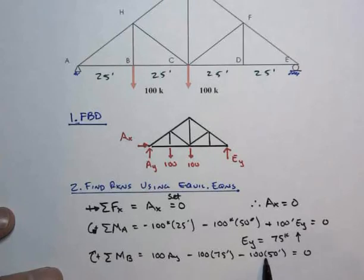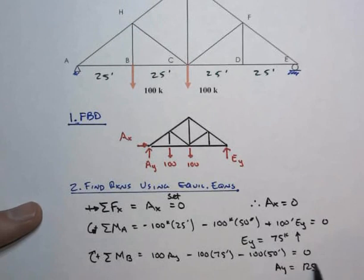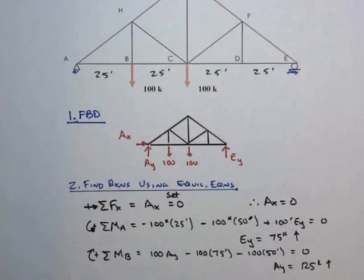That's 5,000. That's 7,500, so a total when divided by 100, that AY is 125 kips acting up. And so we found them all.